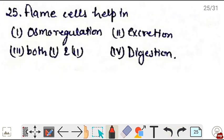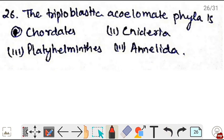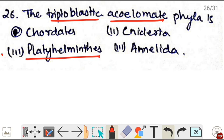Next, flame cells help in - flame cells help in osmoregulation and excretion in flatworms. Correct is option 3, both 1 and 2. Next, the triploblastic acoelomate phylum is - triploblastic and acoelomate, there's only one phylum, that is Platyhelminthes. Correct is option 3.